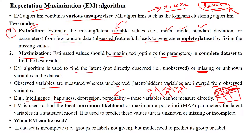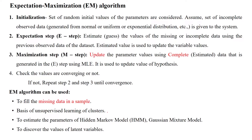The expectation maximization algorithm is used to find the local maximum likelihood or maximum a posteriori probability value of a latent variable. We can use the EM algorithm whenever our data set is incomplete — that means if our data set has missing data. Also, if our data set does not have labels, we can go for the expectation maximization algorithm.